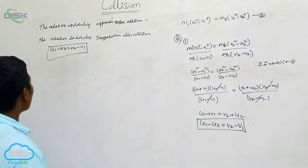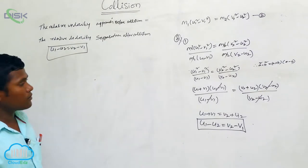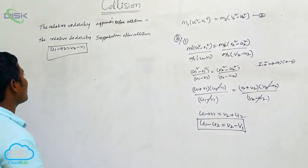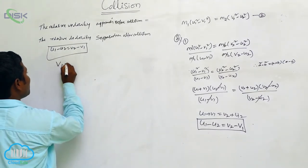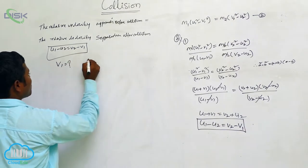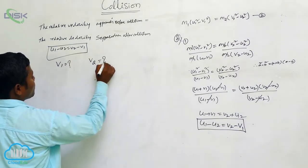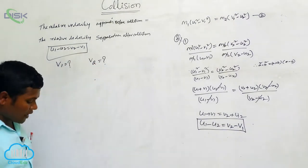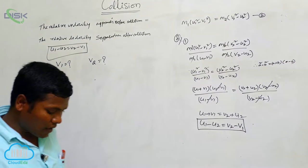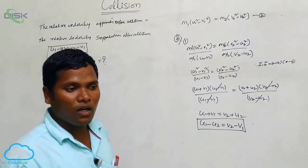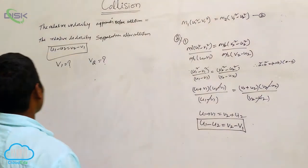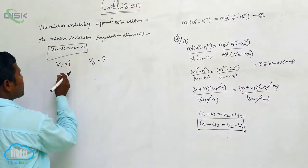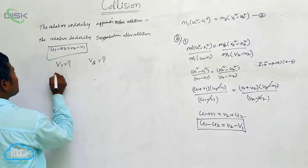Now we are going to find the velocities — the V1 value and V2 value. If we are able to find these values, then our velocity problem will be solved. So for this purpose, from the previous equation, we have M1 U1 plus M2 U2 is equal to M1 V1 plus M2 V2.